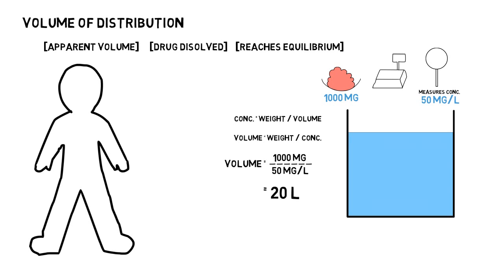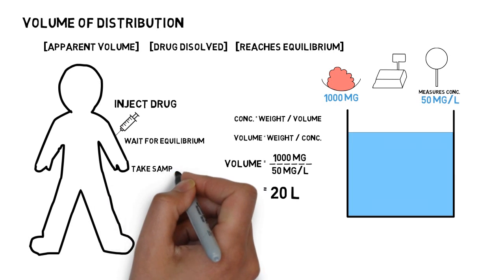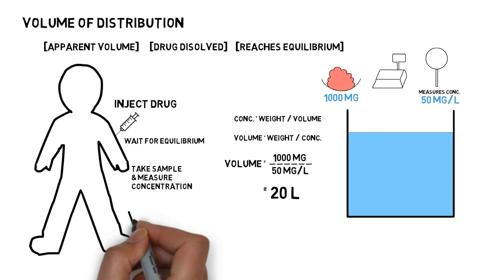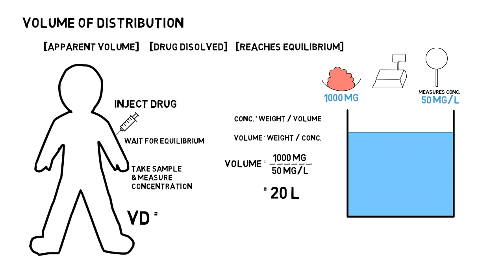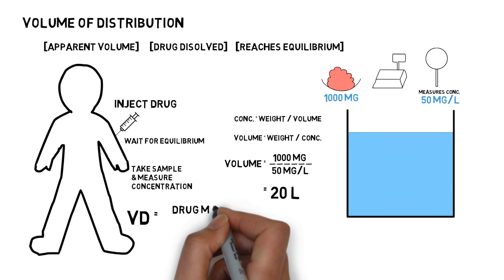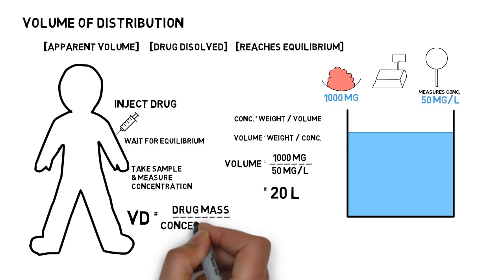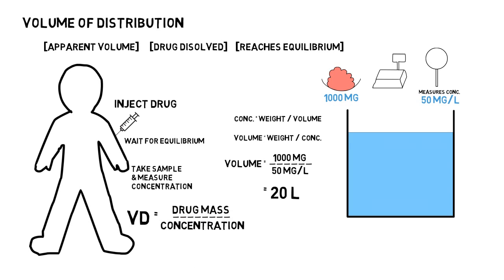So how do I estimate volume of distribution in human beings? First I inject the drug, then I wait for the drug to reach equilibrium, then I take a sample from the blood and measure its concentration. I use the same formula — volume of distribution equals drug mass divided by concentration — and there I get the volume of distribution of the drug in the human body. It's very difficult to measure the volume directly in a human being, so we measure it using the concentration.